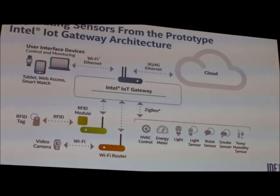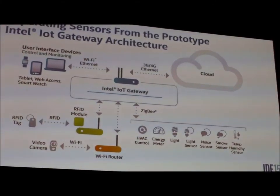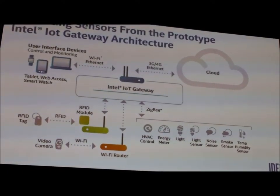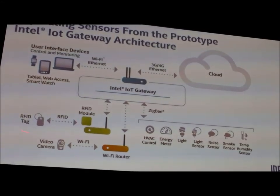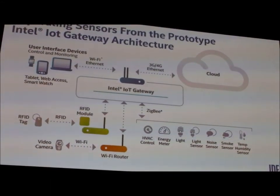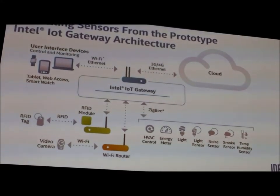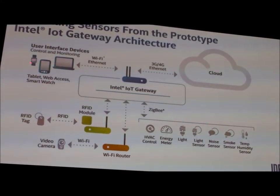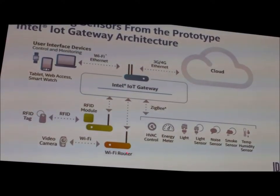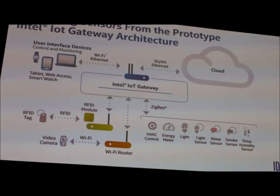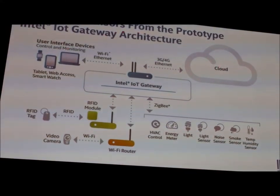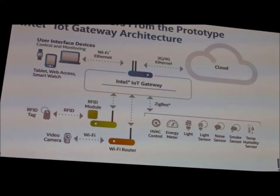Rather than the large network architecture shown at the beginning, we're going for a medium-sized network architecture. The sensors from the prototype are now taken off the prototype and put onto a network. User interfaces could be tablets or smartwatches — also network-connected devices. The gateway and cloud complete the picture.